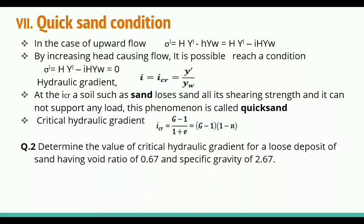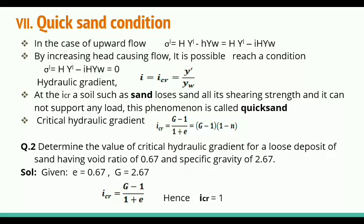Question 2: Determine the critical hydraulic gradient for a loose deposit of sand having void ratio e = 0.67 and specific gravity G = 2.67. Using I_cr = (G−1)/(1+e), we get I_cr = (2.67−1)/(1+0.67) = 1.